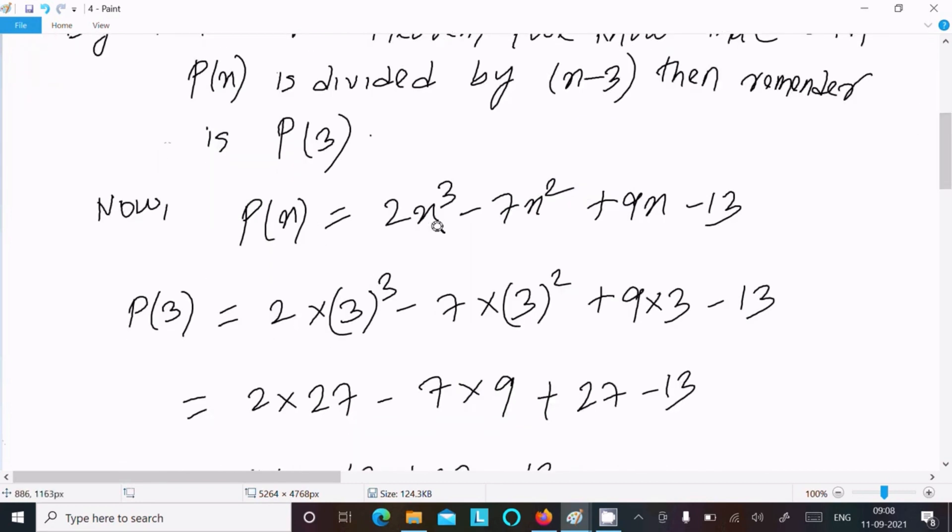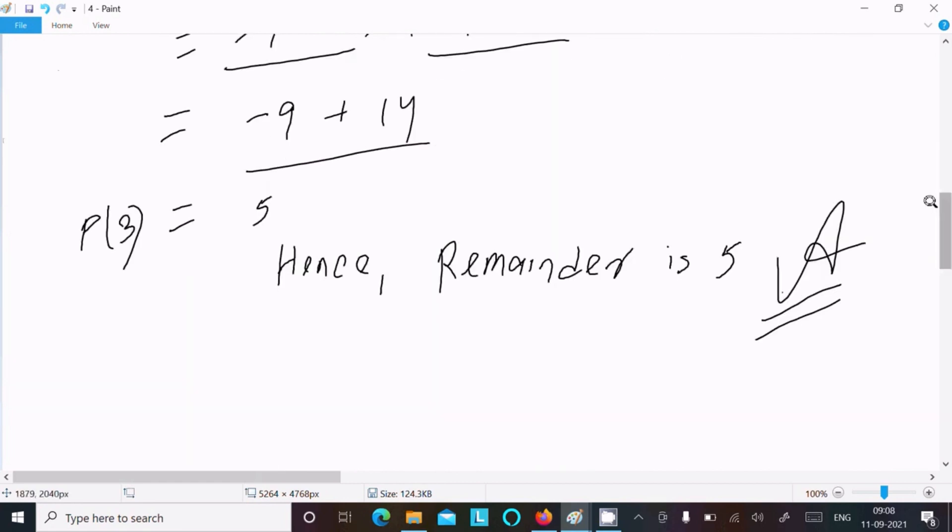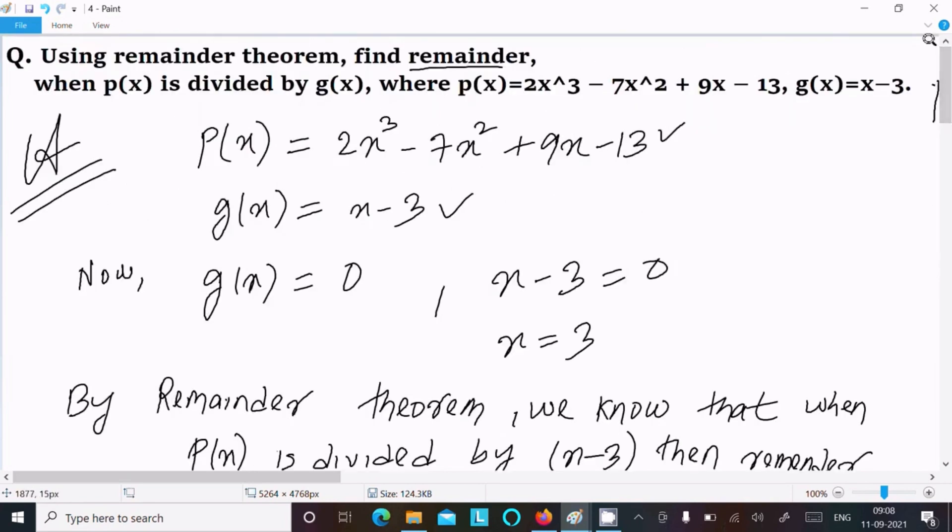So write the p(x) value, substitute x equals 3, and after calculating you get 5. This is the way we can find the remainder of this question. So now this video is over. Thanks for watching, see you next week, thank you.